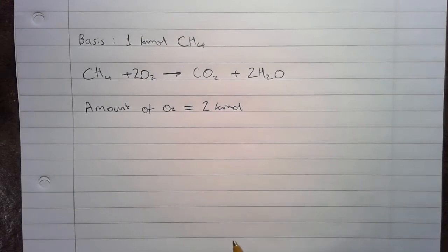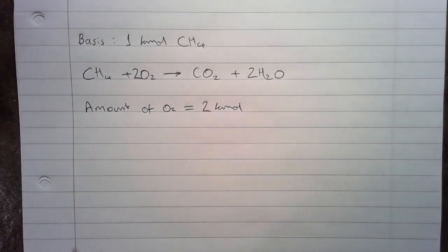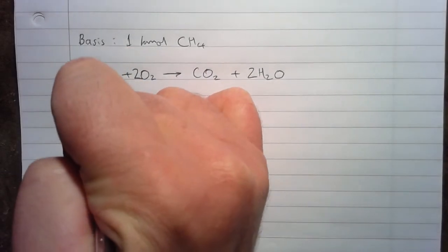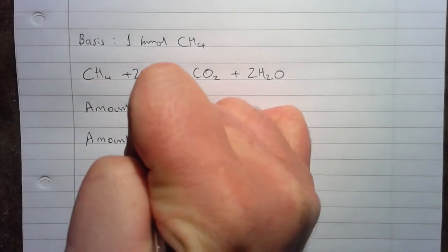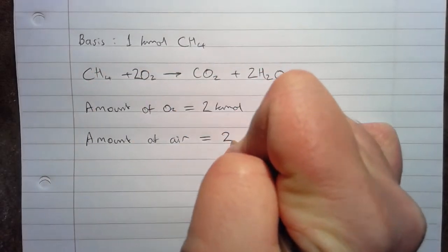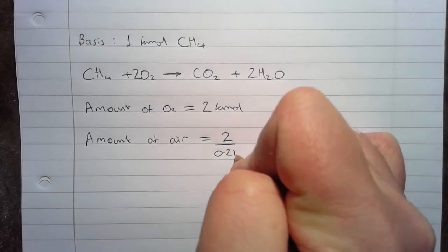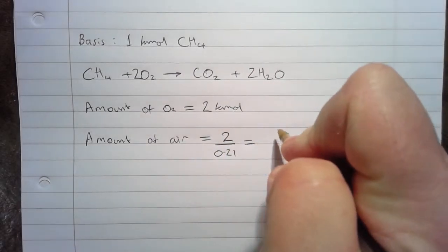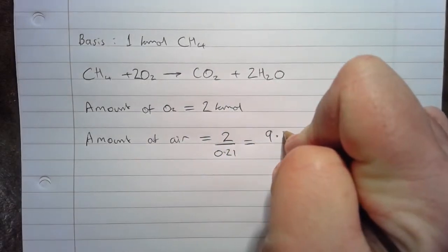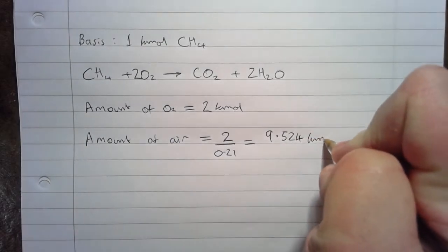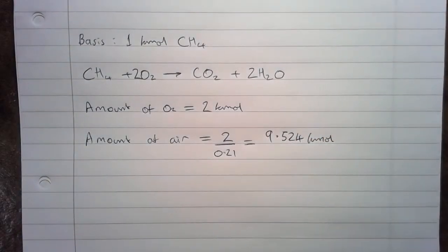For the amount of air, we can calculate that based on the fact that we're assuming that the air is 21% oxygen. So amount of air equals 2 divided by 0.21, and that gives us 9.524 kmoles. That is the amount of air that we theoretically need to burn 1 kmole of methane with complete combustion.